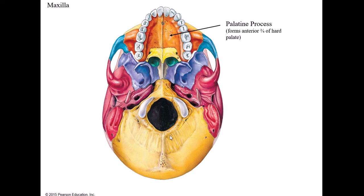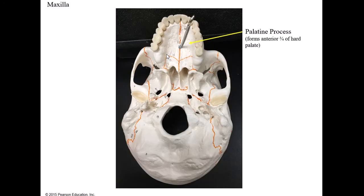Forming the front three quarters of the hard palate is the palatine process of the maxilla. If you take your front teeth and run your tongue backwards, you feel the roof of your mouth - those front three quarters are the palatine process. There is also a separate bone called the palatine bone.